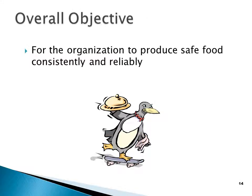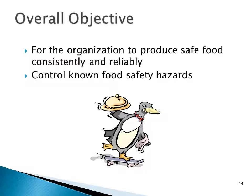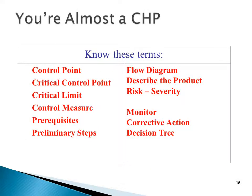The overall objective of the whole HACCP program is for the organization to produce safe food consistently and reliably and to control known food safety hazards. If you don't know the difference between control point, critical control point, critical limit, control measure, and all that — those are the people who fail a test. Make sure you copy all these down, and make sure you can pick them out on a test and know the difference between the various terminology. If you can tell what all these are, you'll pass the test.